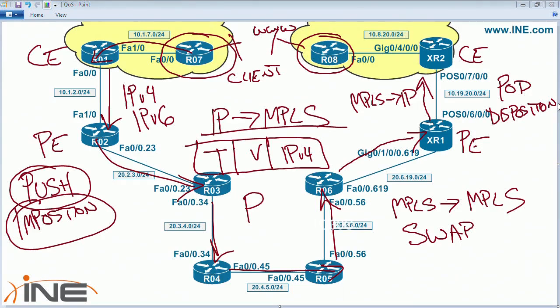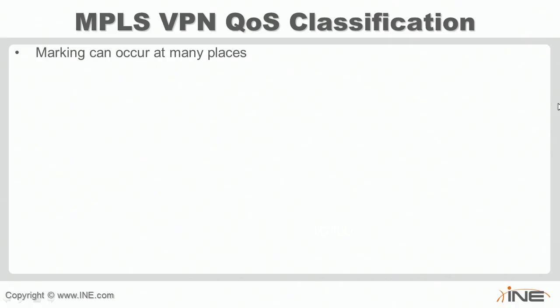This MPLS label processing is significant for QoS because, depending on where we apply classification, we need to ask: is the router classifying based on unlabeled IP traffic, or based on the MPLS label? Different features apply at the customer edge, the provider edge, and the provider core to accomplish the same goal of classifying, marking, and queuing traffic. The key question to ask when developing a QoS policy is: what type of packet am I dealing with at this particular interface and hop in the network — native unlabeled IP, a packet with a transport label, a VPN label, or an MPLS TE label?